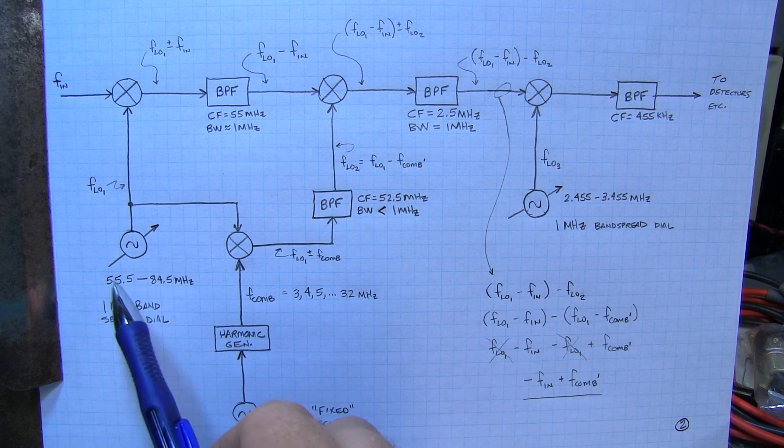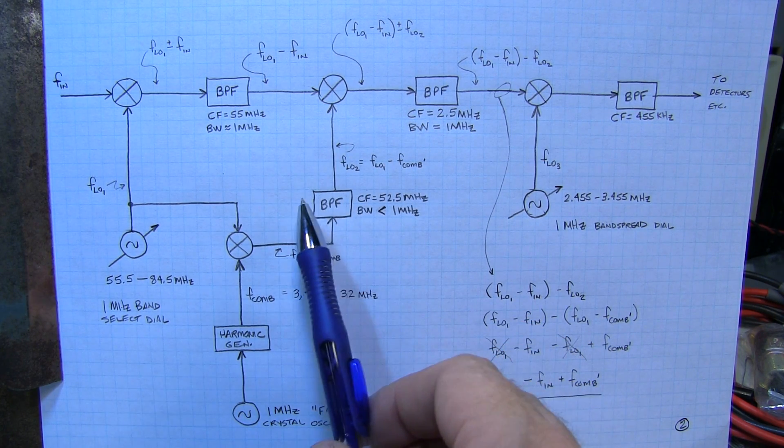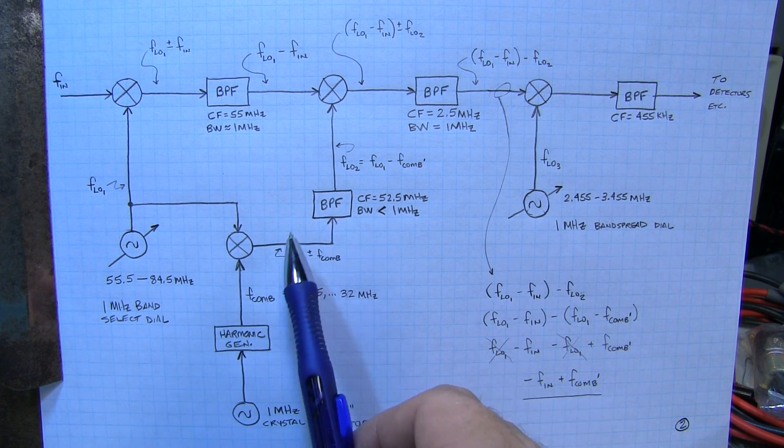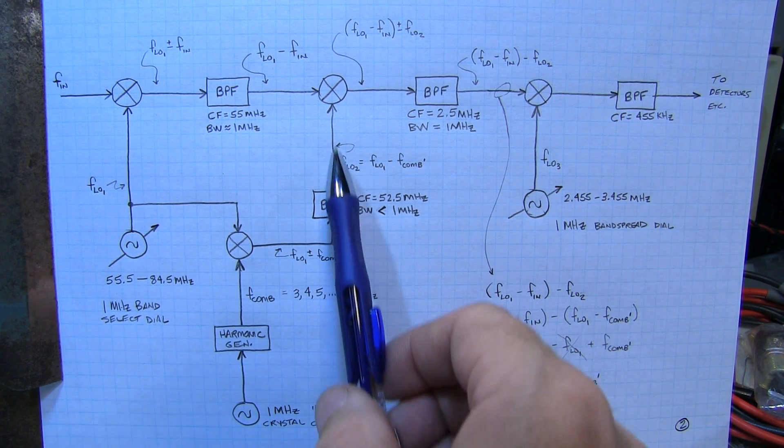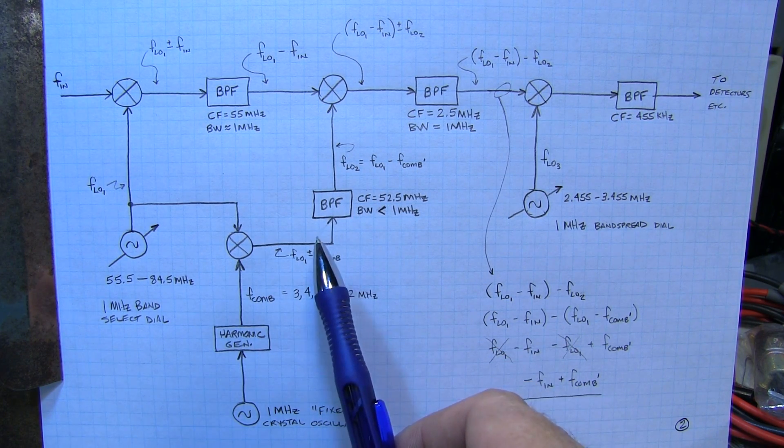But as this tunes up that signal will walk out of this filter and if we keep tuning the VFO up then once we're 4 MHz away then the 4 MHz component will come through here. So essentially at every 1 MHz through the tuning range of this dial we're going to pass a signal out of this bandpass filter that is at 52.5 MHz.